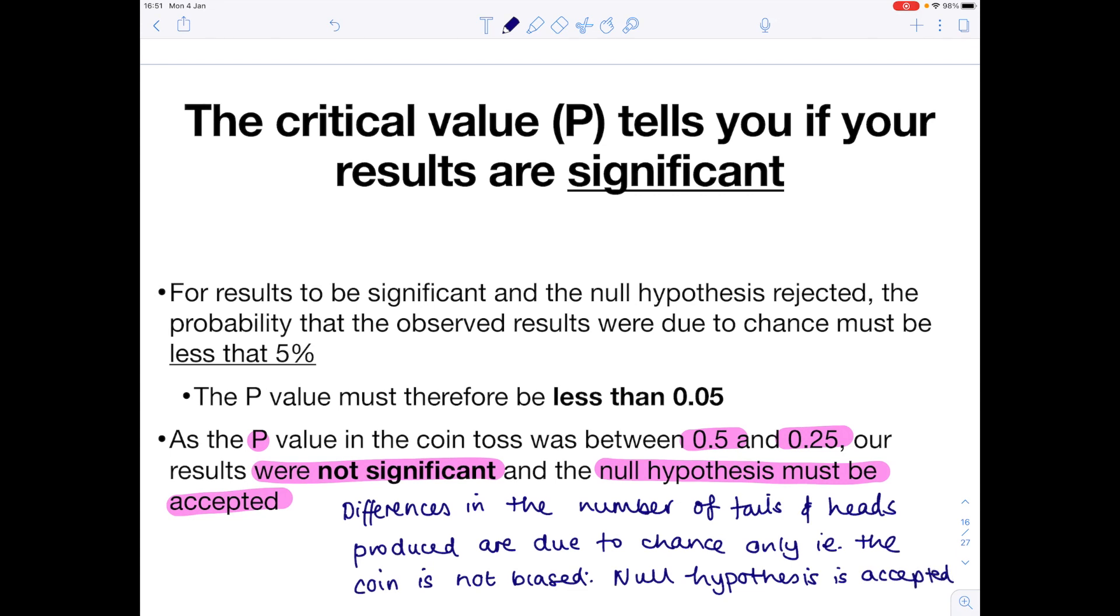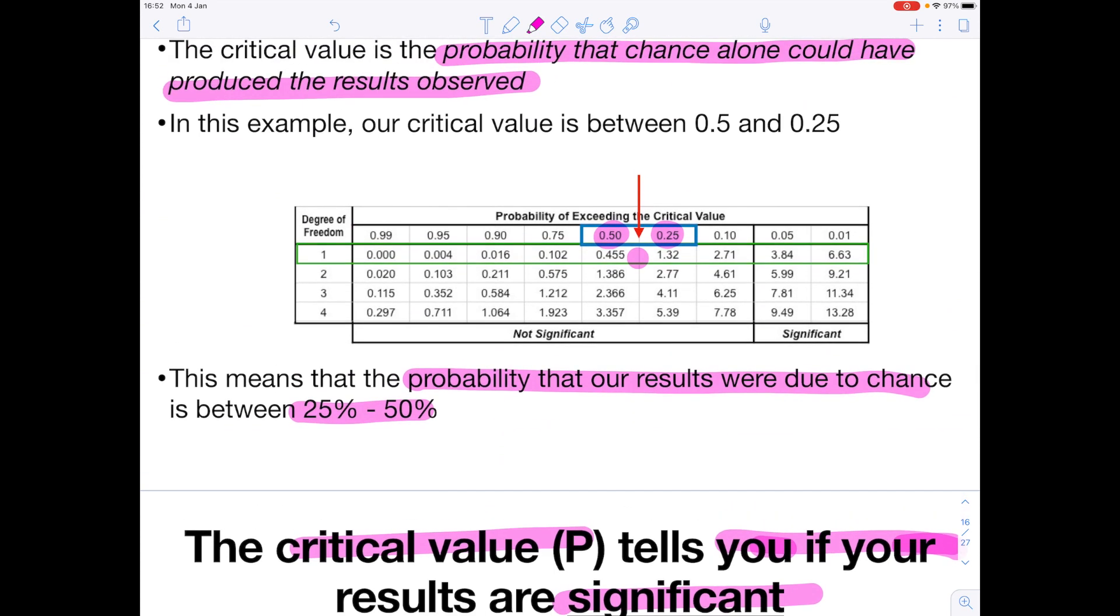So we've already discussed our example here, but let's back up a little bit and look at our general overview. We know that the critical value P tells you if your results are significant. For results to be significant and the null hypothesis rejected, the probability that observed results were due to chance must be less than 5%. Therefore, the P value must be less than 0.05. All that's saying is our chi-squared value, based on the degrees of freedom which we would have calculated, must fall somewhere in here for the results to be statistically significant. If we'd had more categories, then obviously we'd be looking at a different row because we'd have a differing degree of freedom.